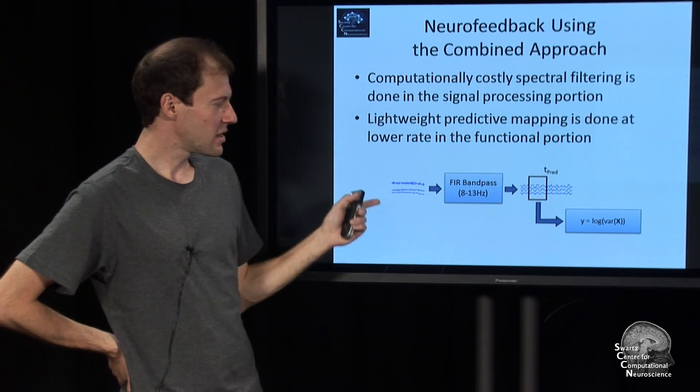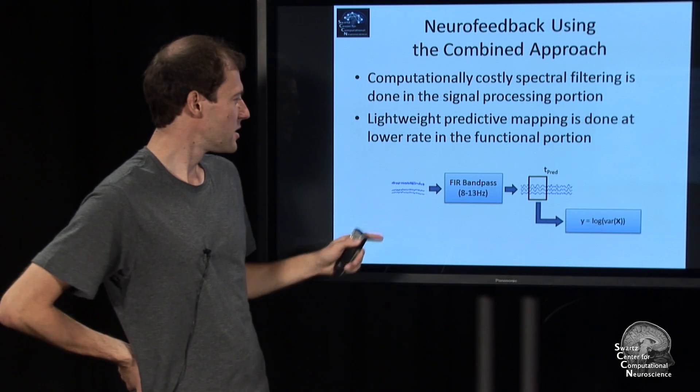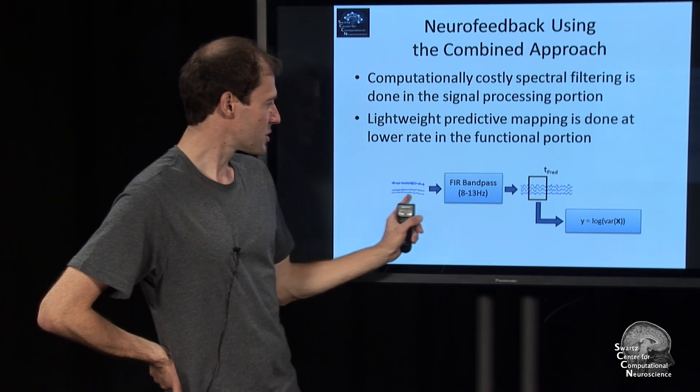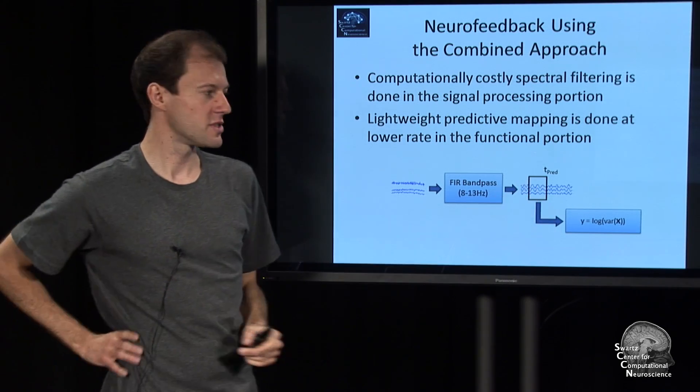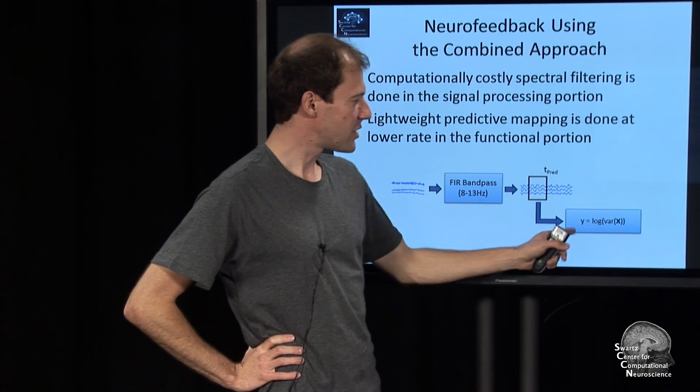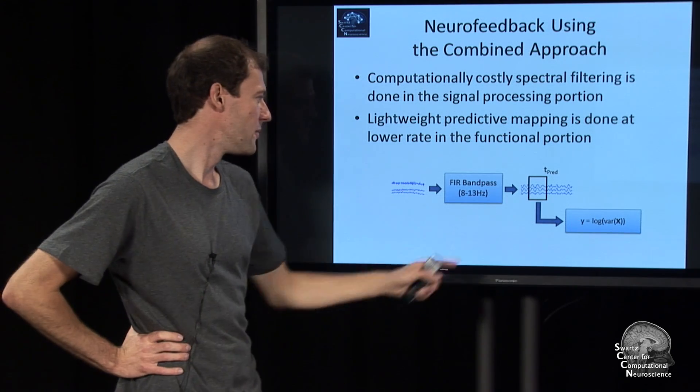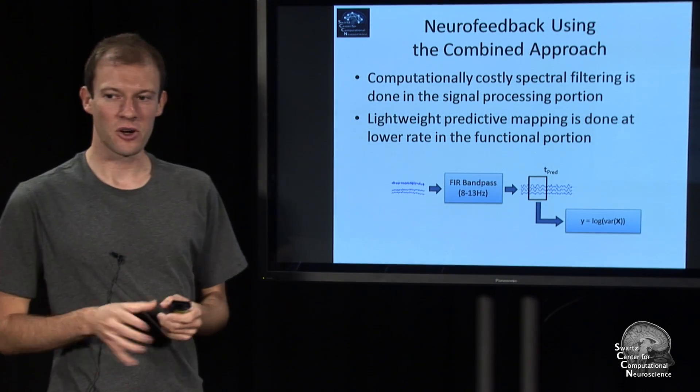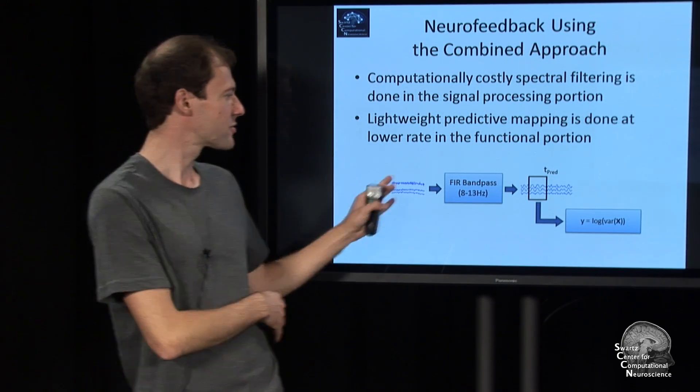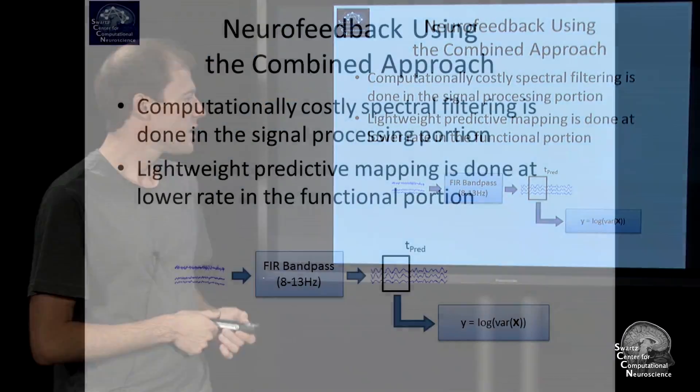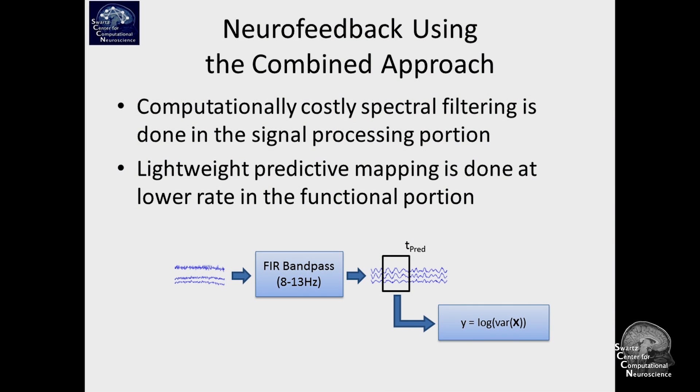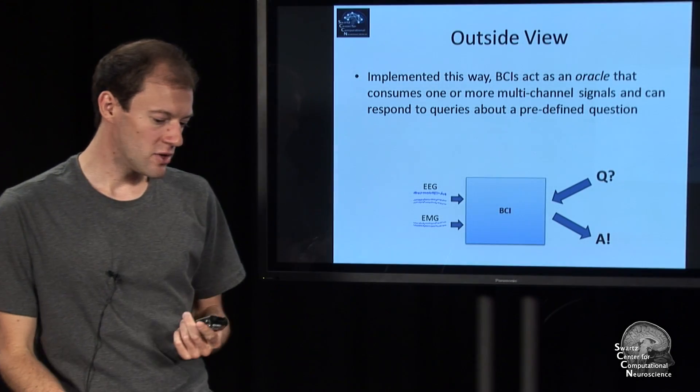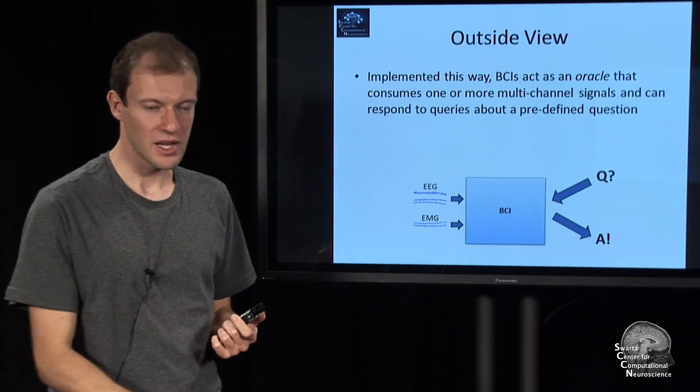Spelling out the same neurofeedback BCI in that framework says we'll do the band pass filter, the FIR filter, just using a signal processing block efficiently, gives us a band pass filtered signal. The prediction function is the log variance of that chunk of filtered signal. This is a relatively neat way of framing this, and it makes it clear that different frameworks have different strengths. This is also how you will see you can write BCIs in the BCI-Lab toolbox. You can design these things separately or in combination.